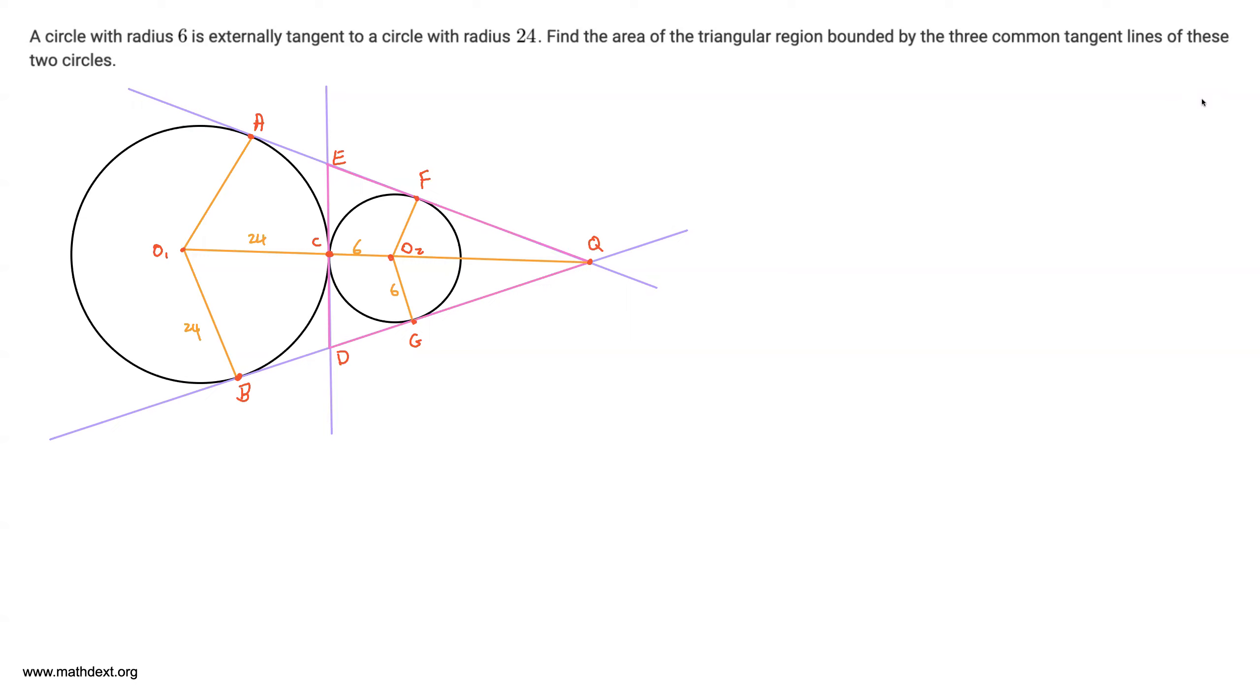Okay, so I've drawn a diagram of these two circles as well as the three common tangents, which I've drawn in purple. Two of them are common exterior tangents, one is the common interior tangent, and the triangular region we're trying to find the area of is labeled QED, along with some of the other points I've also labeled.